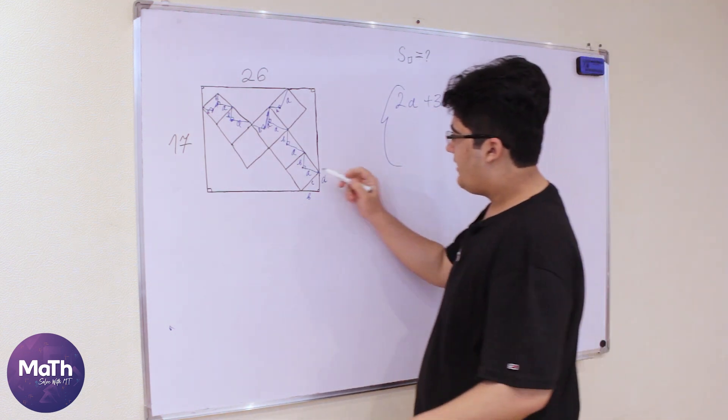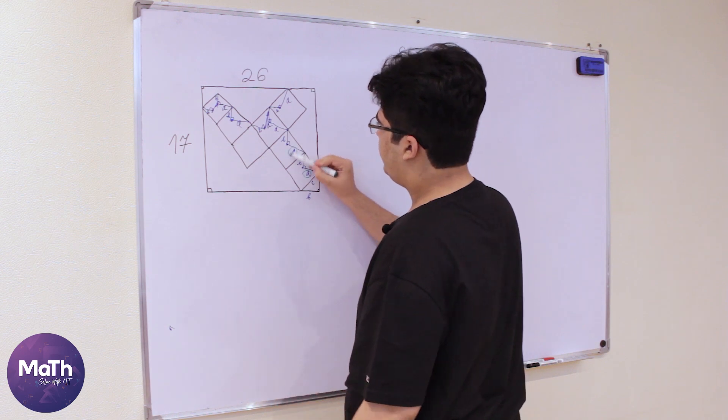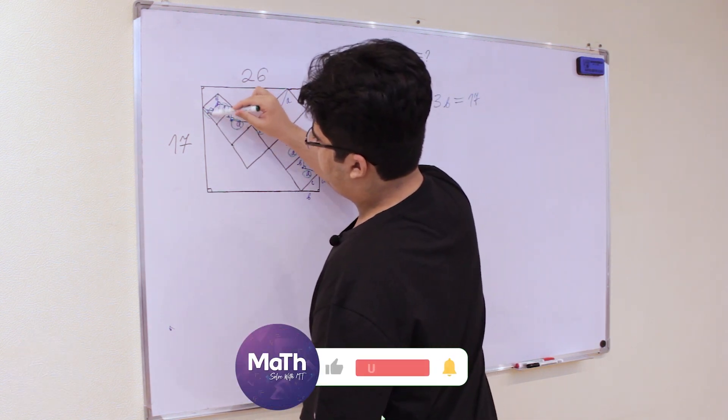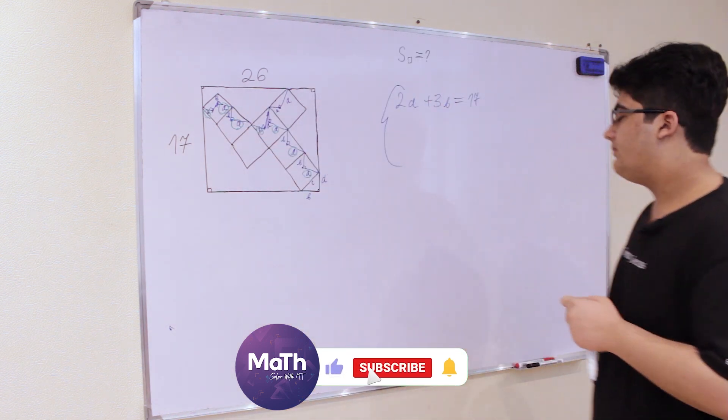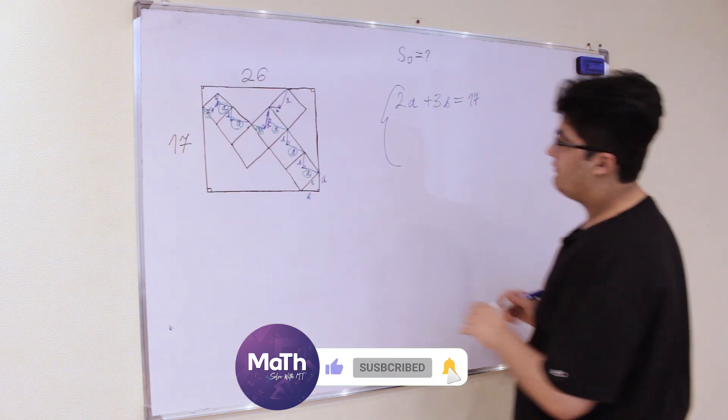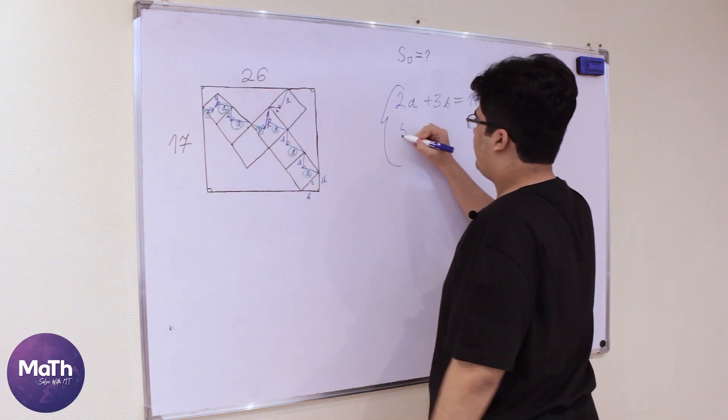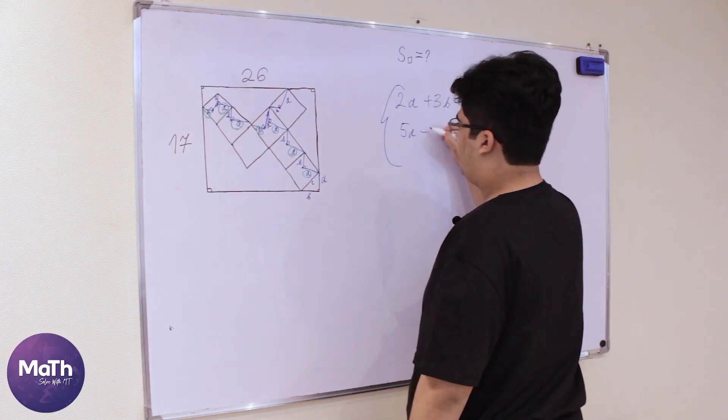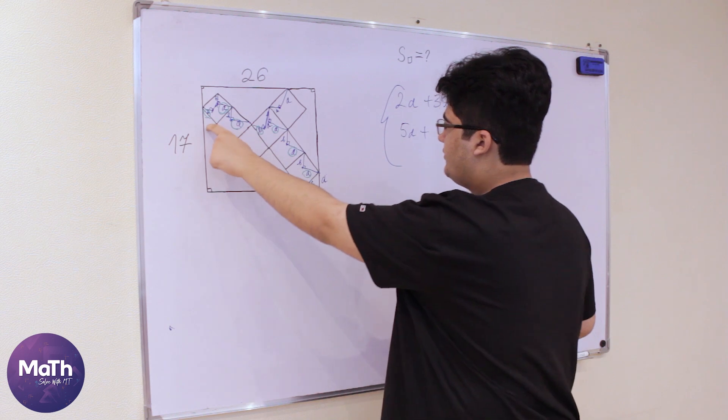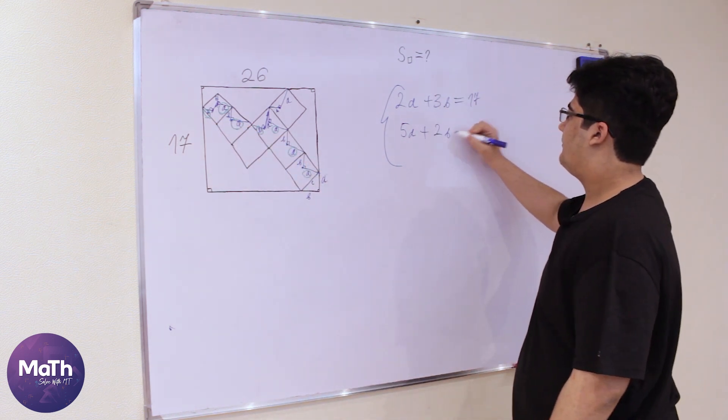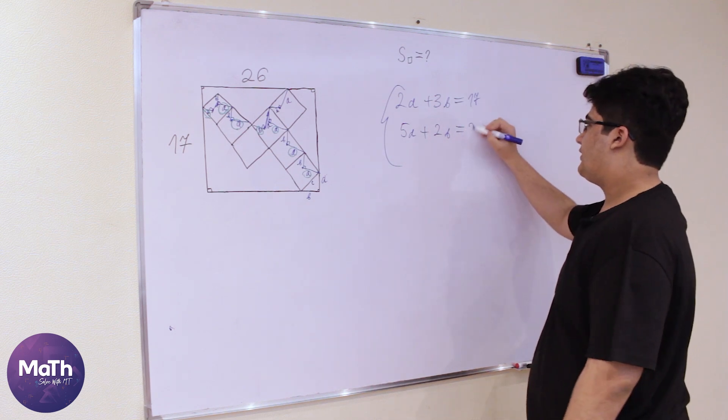So what we have here, we have a, we have a, we have a a b a a and b, so we have one two three four five a plus one two b and that is equal to 26.